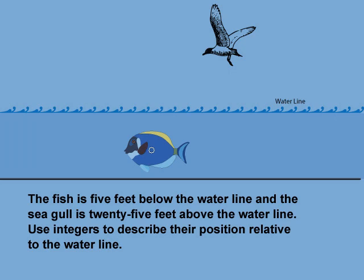Let's look at another example. The fish is 5 feet below the water, and the seagull is 25 feet above the waterline. Use integers to describe their position relative to the waterline. You saw in the previous example that integers can be used to count certain types of objects. In this example, you'll see that integers can be used to make certain types of measurements, in this case, distance. Here we are looking at positions above and below the waterline. The seagull is 25 feet above the waterline, and the fish is 5 feet below the waterline.